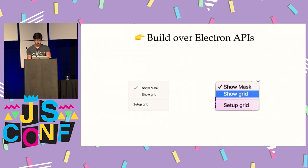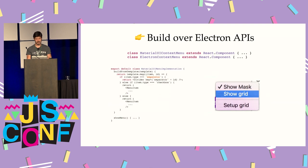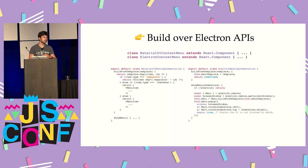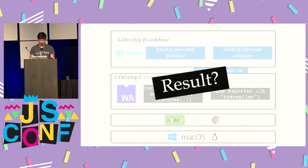Another piece of advice: build over the native API as much as you can. For example, I made two versions of the context menu — on the left the Material UI context menu so it runs in a web browser, and on the right the same context menu using Electron APIs, giving you a real native context menu. Instead of rendering Material UI components I call the Electron API to create the context menu. This is really helpful for making the application look like a native application and not 'webish'.